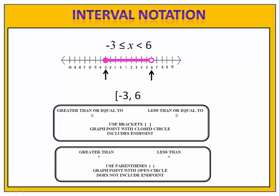We use this rule: if the number is included — a solid circle — we use a bracket. If the number is not included — an open circle — we use a parenthesis. Because this interval includes negative 3, we have a bracket at negative 3. The interval does not include 6, so we have a parenthesis at 6. And now we've written this interval using interval notation.